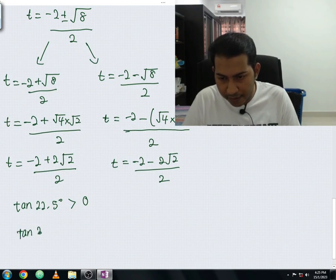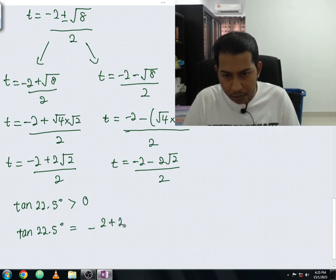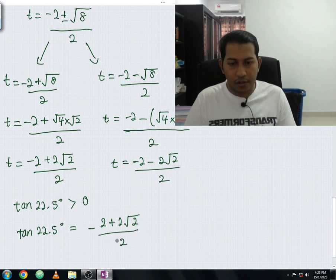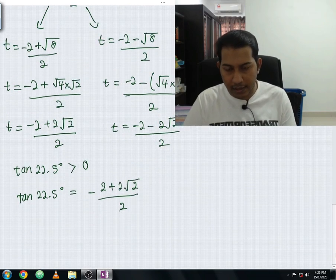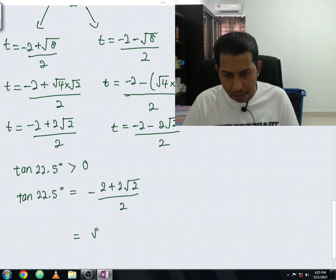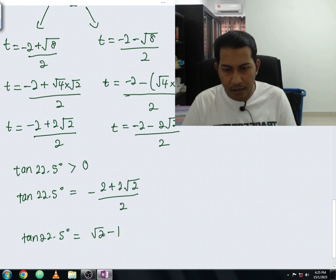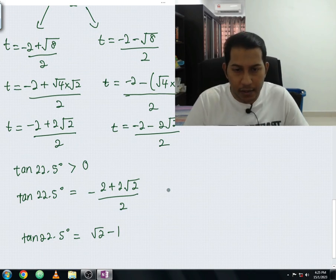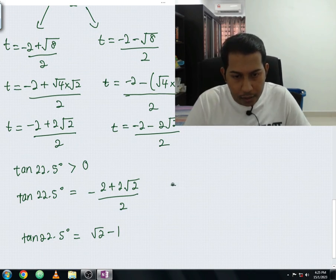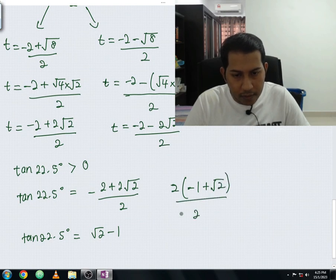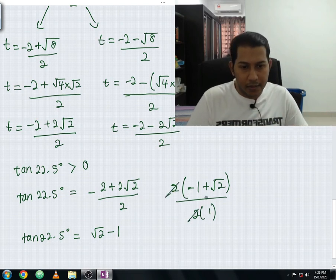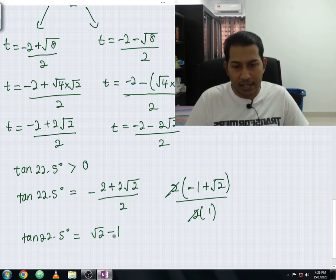Taking the positive answer: tan 22.5° = (−2 + 2√2) / 2. Factoring out 2 from the numerator and cancelling with the denominator: tan 22.5° = √2 − 1. That is the answer for part c in surd form.